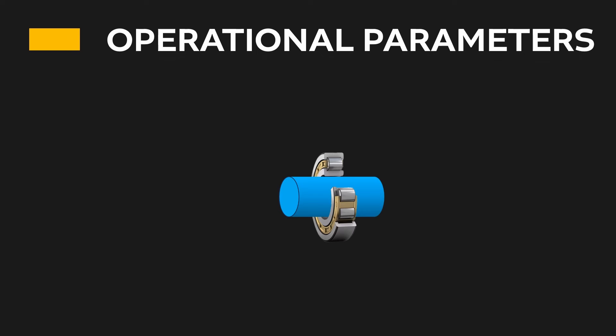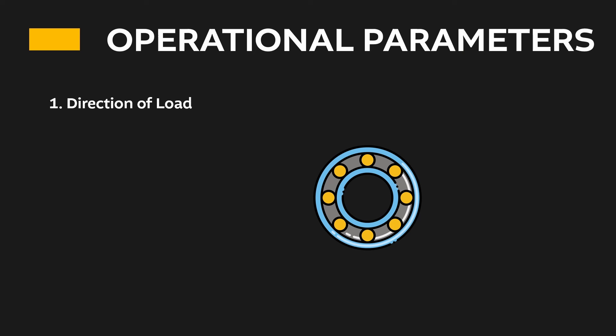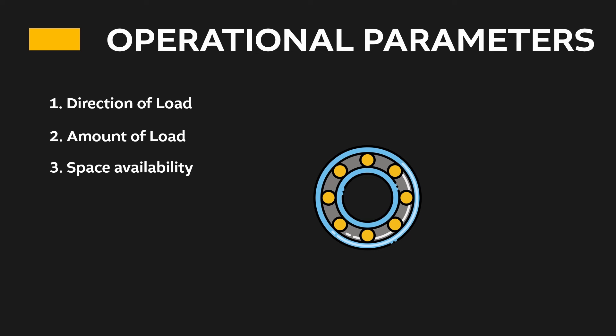So what are the operating parameters we should look at in case of bearing? Number 1 is direction of the load — like radial load, thrust load, or combination of load. Number 2 is the amount of load over the bearing: maximum load, or peak load, as well as the minimum load. We should also consider the minimum load over the bearing because it matters — we will discuss it later. And number 3 is how much space is available: how much is the shaft diameter and how much space we have as the housing diameter.